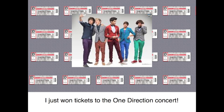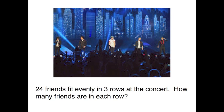I was the 25th caller on my favorite radio station and I won tickets to the One Direction concert. They gave me 24 tickets. We got to the concert kind of late and we don't want to disrupt the fans already in their seats. So in order to cause the least amount of disruption, I want to send the right amount of friends to each row. Here's the problem: 24 friends fit evenly in 3 rows at the concert. How many friends are going to be in each row?